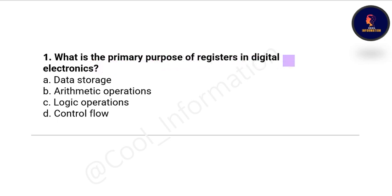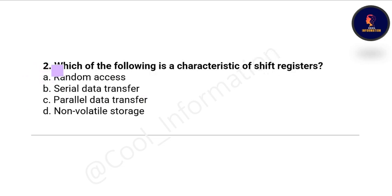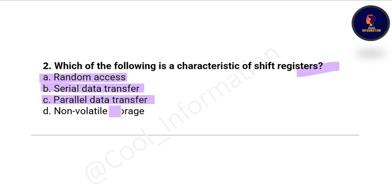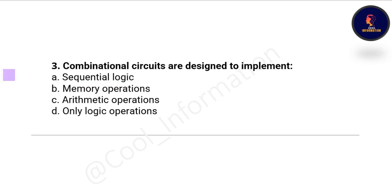Question 1: What is the primary purpose of registers in digital electronics? Option A: data storage, Option B: arithmetic operations, Option C: logic operations, Option D: control flow. The correct option is data storage. Question 2: Which of the following is a characteristic of shift registers? Option A: random access, Option B: serial data transfer, Option C: parallel data transfer, Option D: non-volatile storage. The correct option is serial data transfer.